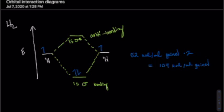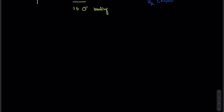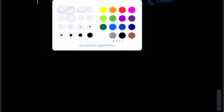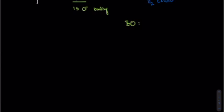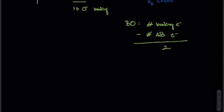So we can use this orbital interaction diagram to prove that diatomic hydrogen exists. We can also do so by calculating bond order. The formula for bond order is the number of bonding electrons minus the number of antibonding electrons divided by two.